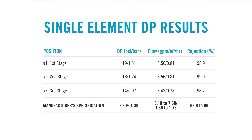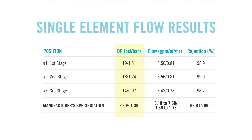We see that the delta pressure is highest for the first element in their first stage. As you travel through the system, the delta pressure becomes more manageable, even though it's still elevated. We expect delta pressure of clean elements to be between 3 and 5 psi.